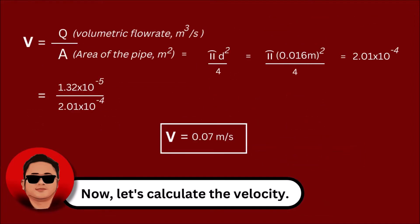Now, let's calculate the velocity by dividing the volumetric flow rate by the area of the inner pipe. So, we've got 0.07 meters per second velocity of the fluid.